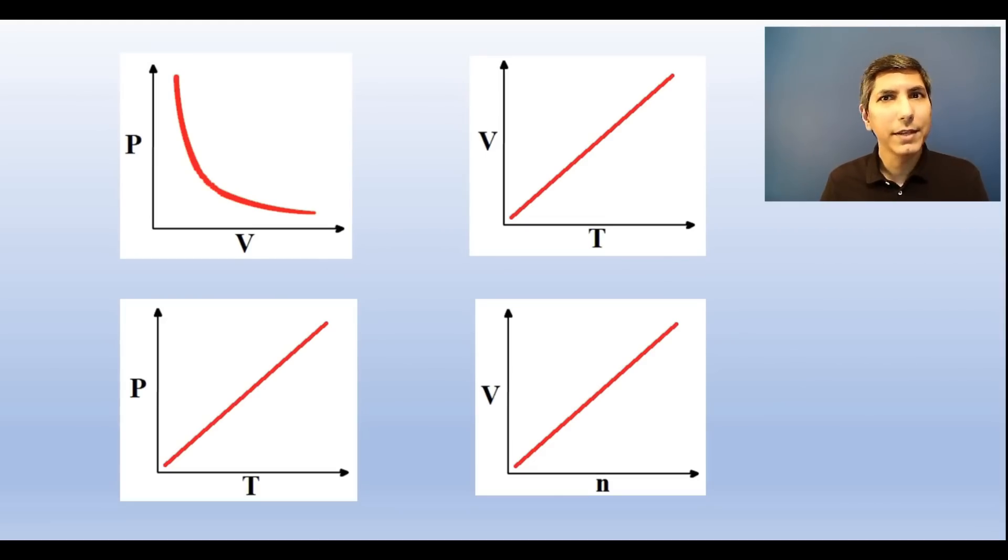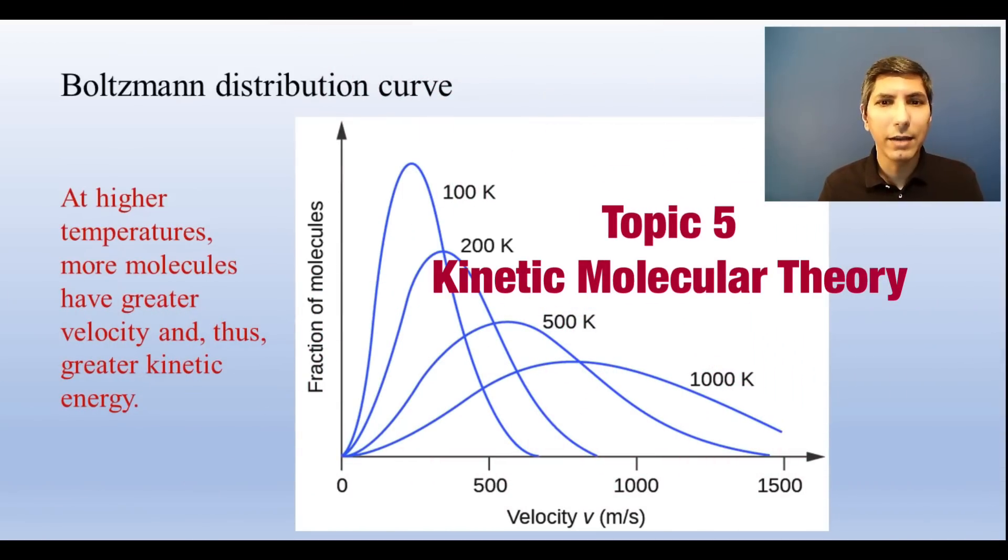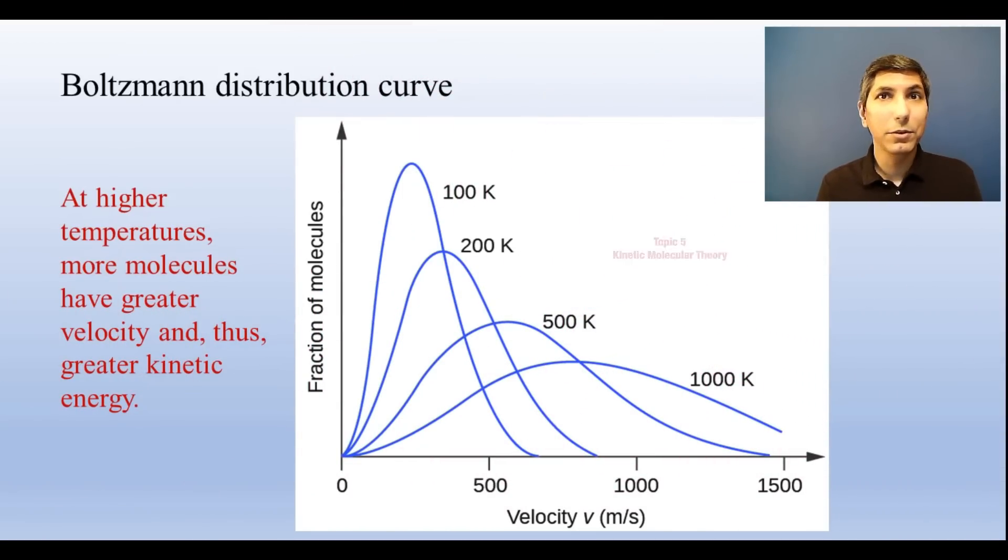Now temperature is a measure of the average kinetic energy of the molecules in a sample. So if two different materials have the same temperature, their molecules have the same average kinetic energy. If one molecule has a higher temperature, its molecules have a higher average kinetic energy. A graph like this Boltzmann distribution helps us visualize the range of motion in molecules at different temperatures. No matter the temperature, some molecules are moving faster and some slower. At higher temperatures, a greater fraction of particles are moving faster.